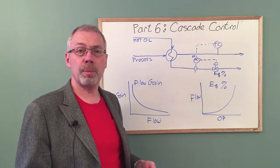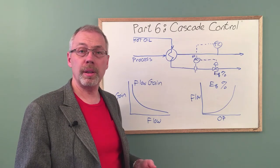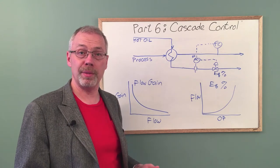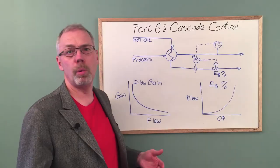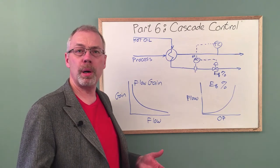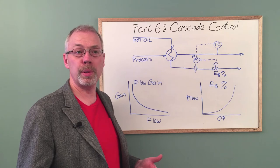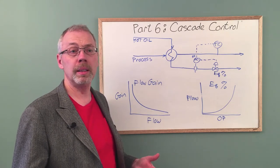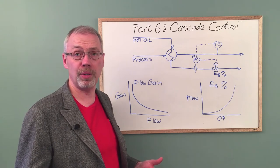But what if the supply pressure is steady, like the discharge pressure from a centrifugal pump? Does cascade control provide a benefit? We will assume that the flow control valve is equal percent. Part 3 demonstrated that an equal percent valve was well suited for temperature control. As well, equal percent valves are often specified by default.